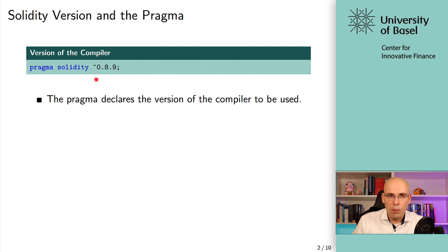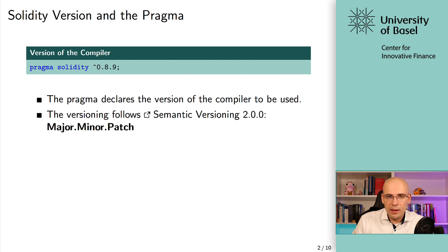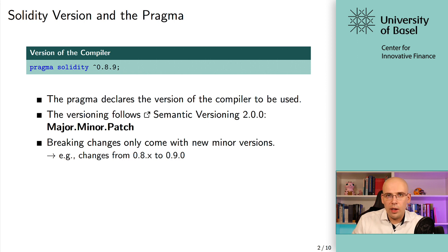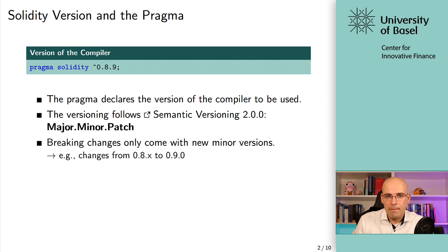The caret means anything that is at least 0.8.9 until the next breaking change. It follows the semantic versioning guidelines: major, minor, patch. Breaking changes with Solidity only come with new minor versions, or major versions, but there isn't a major version yet. For example, the switch from 0.8.x to 0.9.0 would contain breaking changes — that's where you potentially cannot use your old code anymore if you go with a new compiler.